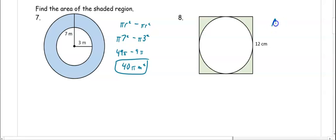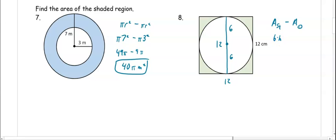In number eight, we have the area of a square minus the area of a circle. The diameter of the circle is 12, so the radius is 6. The diameter also spans the square, so the square's side is also 12. Area of the square is 12 times 12 equals 144, minus the area of the circle, which is π times 6 squared equals 36π. Since one is a number and one has pi, they cannot be combined.